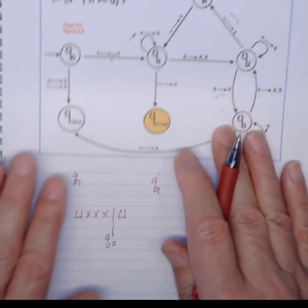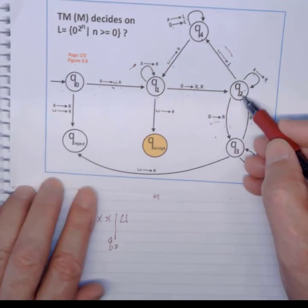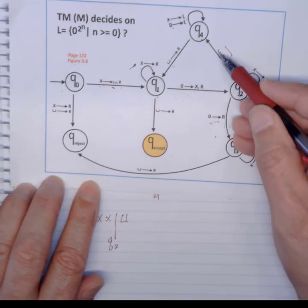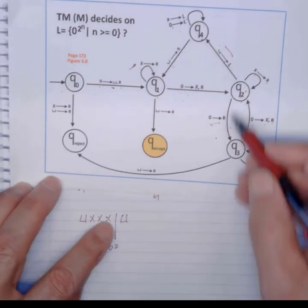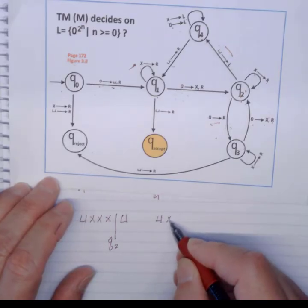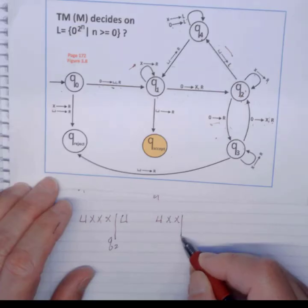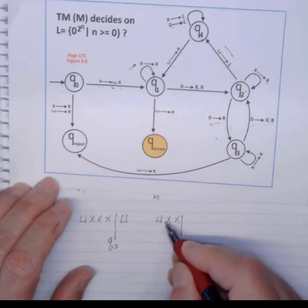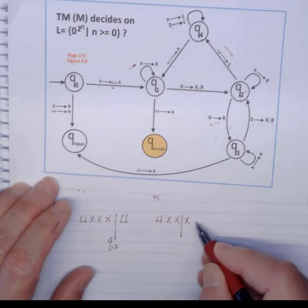Now, when I'm looking at the blank here, when I'm looking at Q2, do I still have a transition to make? Yes, I do. I have a transition and move left. So I'm going to move left this way and move to Q4. So here's my blank, my X, my X, one more X, and then my blank.